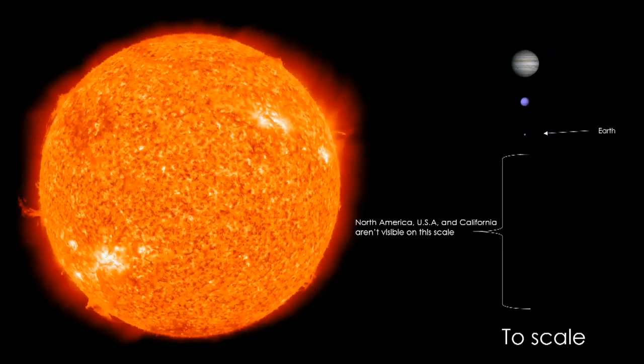And now for the last large body in our solar system, the Sun. Over 100 times the diameter of the Earth. 865,000 miles.